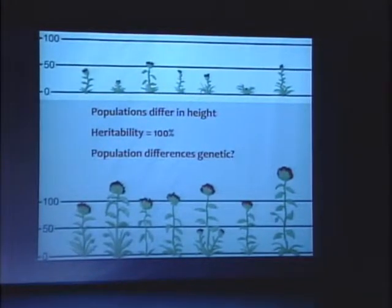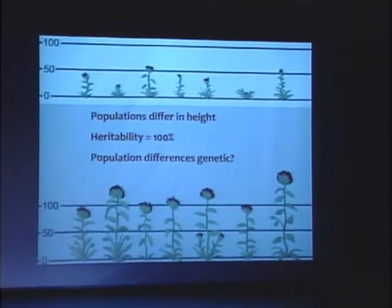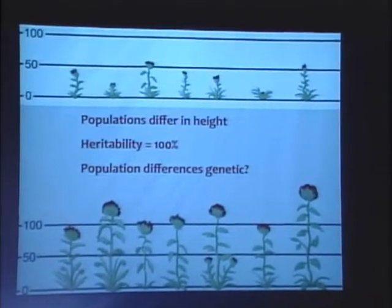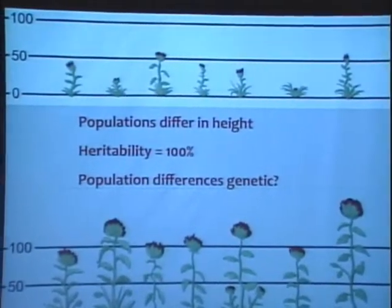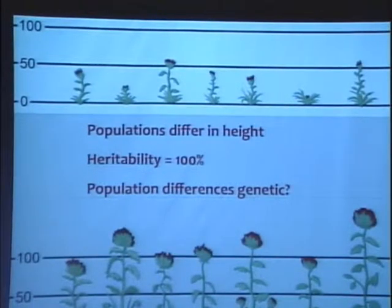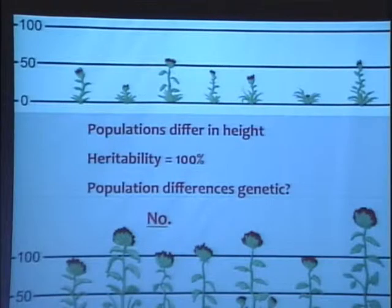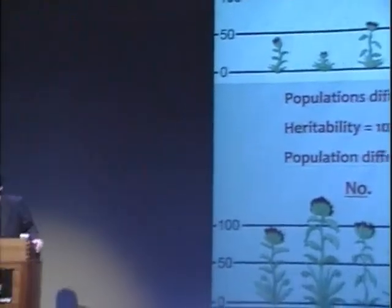So here we have an apparent contradiction. We have two populations that differ substantially in height — they're completely different phenotypically in observable characters — yet the heritability in both populations is 100%. So shouldn't the population differences then be genetic? The answer is no, because we used exactly the same genotypes in both populations. The populations are genetically identical.